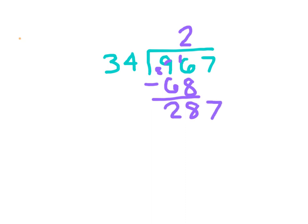Bring down the 7: 287. I look at the 34 there, and if I said it's about 30, I would have chosen 9. But I also still have the 4 ones, and I know that 9 times 4 is 36, so I know that would be too large. I'm going to try 8.